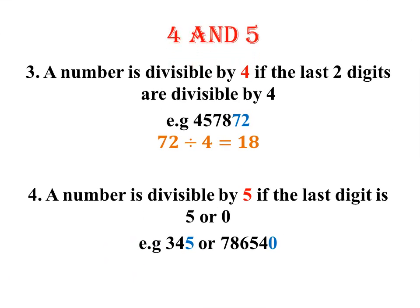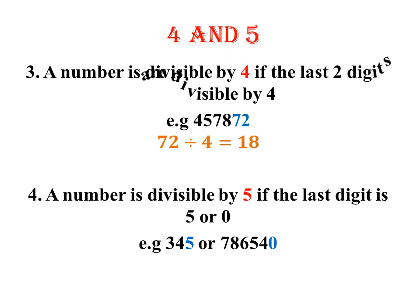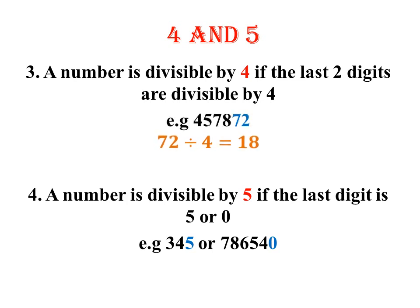In the next set, we have 4 and 5. A number is divisible by 4 if the last two digits are divisible by 4. Like in our example, we have got the last two digits as 72. So if you take 72 and divide by 4, you are going to get 18. Since it perfectly divides into 72, then it means the number is divisible by 4.